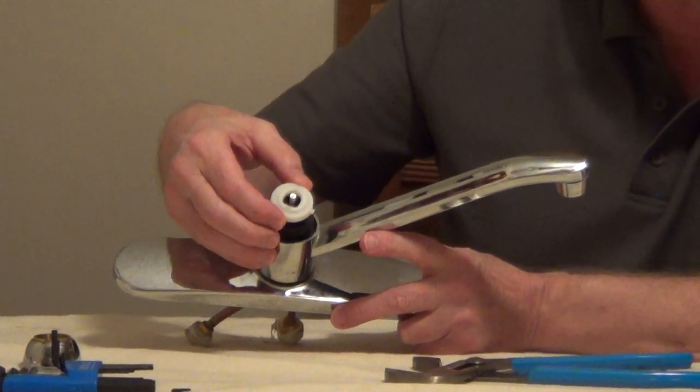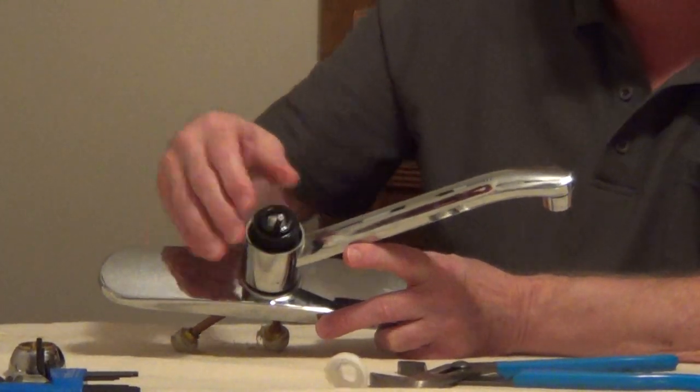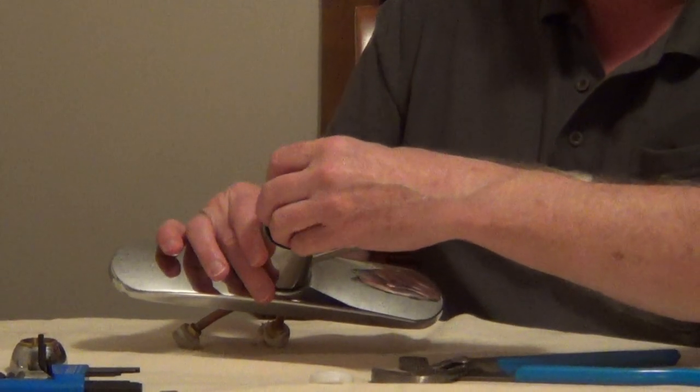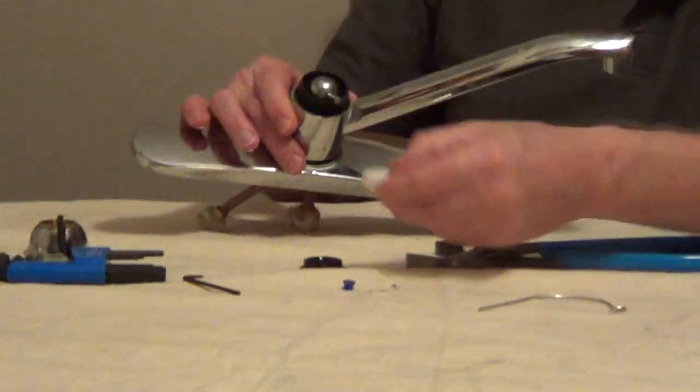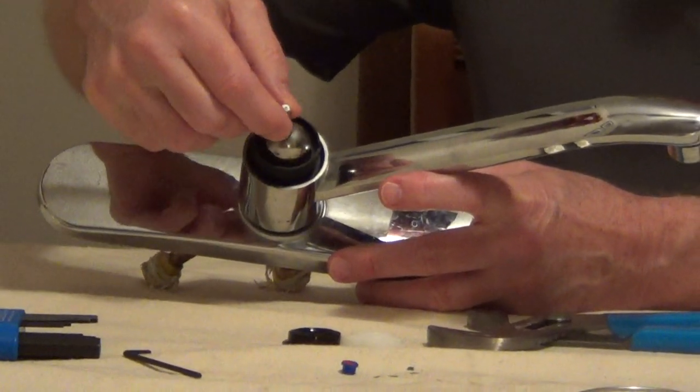There are two different shapes, so make sure that you take this off first or look at it before you run to the hardware store. This has a rubber washer and then a plastic guide on top for the ball. That allows us to get to the ball.